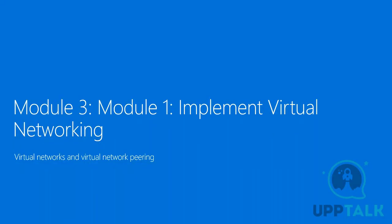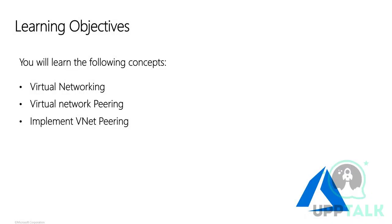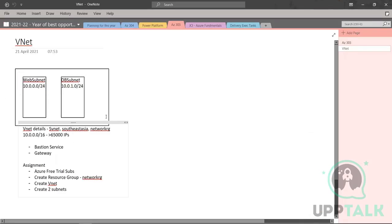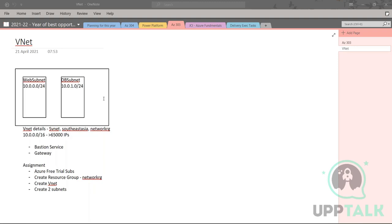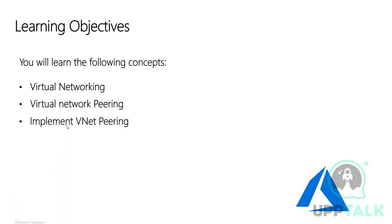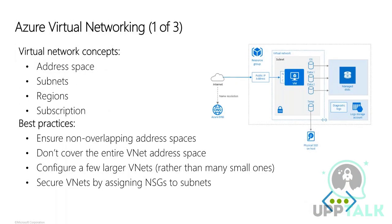Looking at module number three, which covers virtual networking. In the last session we started about virtual networking — what are the options, what are the reasons for using it, and what is the significance of virtual networks. Do your assignments because when you do them you will be able to learn and implement these things. Implementation is an important aspect of this certification, and hands-on will play a very critical role.